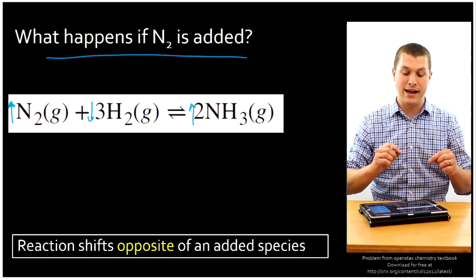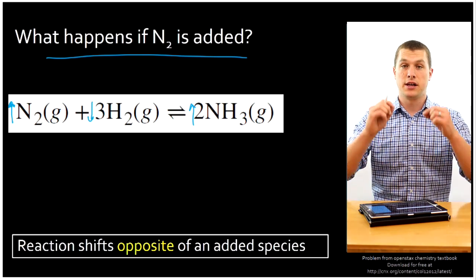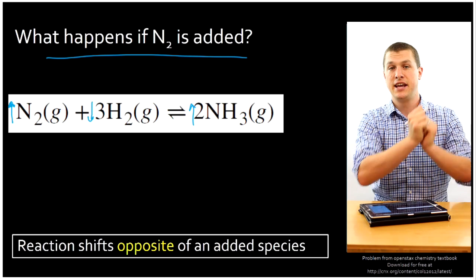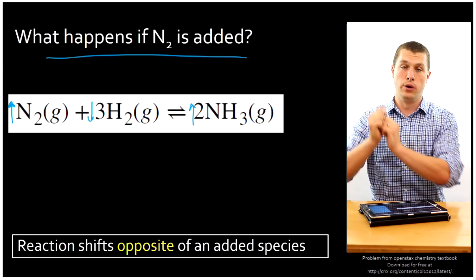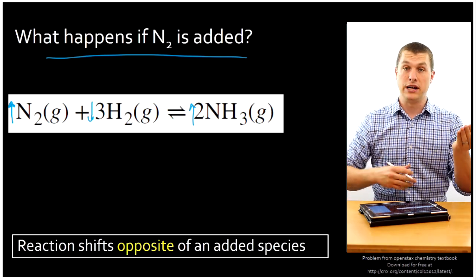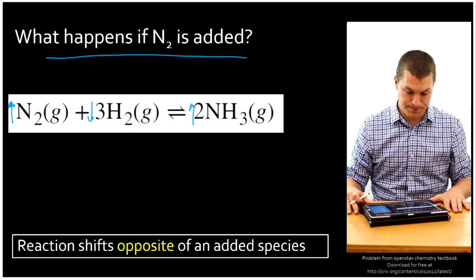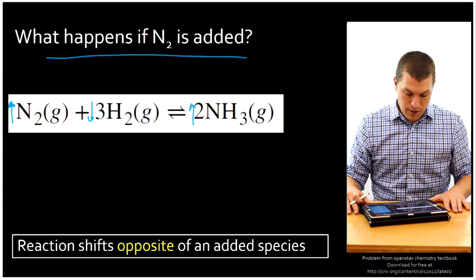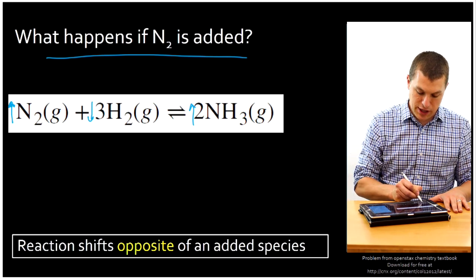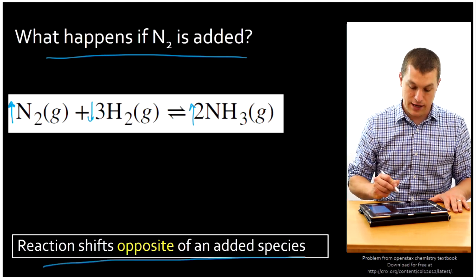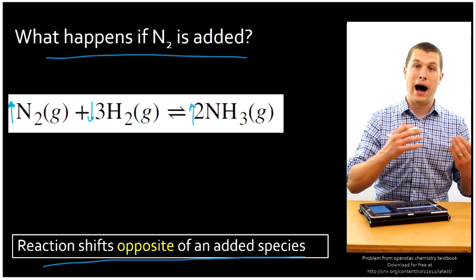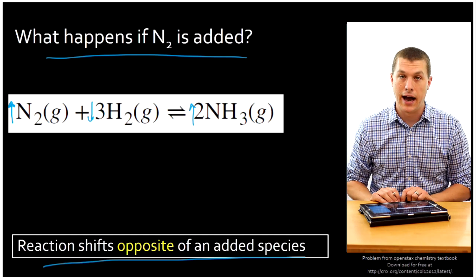When we add nitrogen, the concentration of nitrogen goes up, it reacts with some of the hydrogen, and takes it over to ammonia. So you end up with more nitrogen, more ammonia, and a little less hydrogen. The key thing to remember here is that the reaction shifts to the opposite side of an added species — so whenever I add a species, it goes to the opposite side.